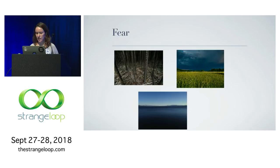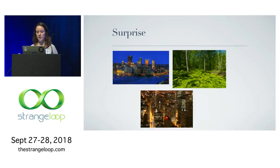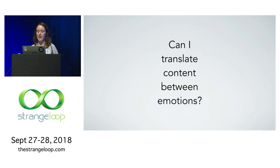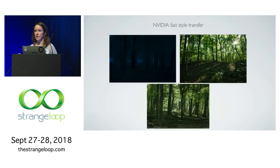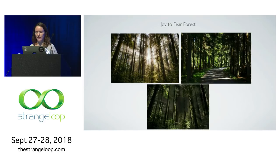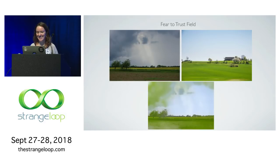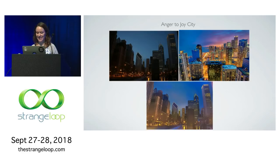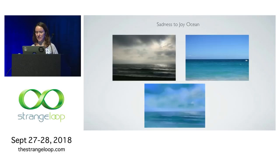I wanted to see if I could transfer the style — could I actually translate content between emotions? I did this using the NVIDIA fast style transfer that came out about a year ago. On top are the two inputs — fear to joy — and the bottom is the output, translating a forest from fear to joy, and from joy to fear — the output is a pretty scary forest. It didn't always work, especially with clouds. This is a fear-to-trust field, and anger-to-joy city which is just a little less gloomy, joy-to-fear forest, and sadness-to-joy ocean.